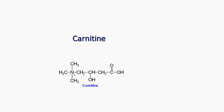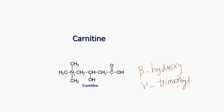Carnitine is beta-hydroxy-gamma-trimethyl-ammonium-butyrate. This is the chemical name of carnitine. Don't get frightened by this name — I will tell you how to easily write the structure.